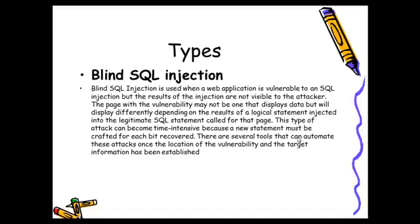Now, the main definition of blind SQL Injection is also here. Blind SQL Injection is used when a web application is vulnerable to an SQL Injection, but the result of the injection is not visible to the attacker. The page with the vulnerability may not be one that displays data, but will display differently depending on the results of a logical statement injected into the legitimate SQL statements.